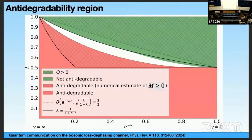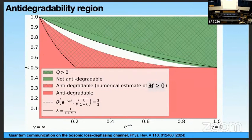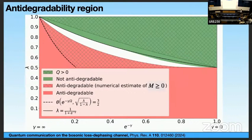We can visualize this region by plotting transmissivity on the y-axis and the dephasing parameterized as e^{-gamma} on the x-axis — giving a parameter between 0 and 1. The red region is where the channel is anti-degradable, so the no-go result for communication and error correction holds. In the non-red green region, there exist protocols to perform quantum communication. This is our main result.